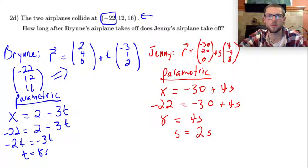So what I'm interested in is how much longer after Bryn's airplane does Jenny's take off. Think about how much time must have passed until Jenny's airplane took off. It wasn't until 6 seconds into Bryn's flight path that Jenny's plane took off.